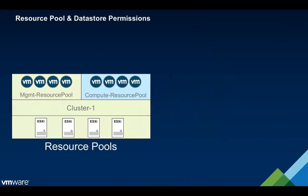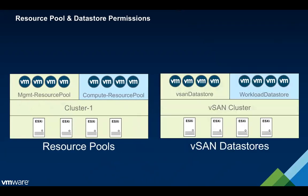On the storage side, there is a single vSAN cluster and we are logically presenting that as two datastores. The vSAN datastore is off-limits — that is for the infrastructure. There's another datastore called the workload datastore that you are going to have permissions to. This is where you will deploy your VMs, so those are two important points to keep in mind as you're building out the SDDC.